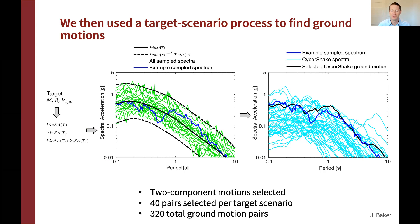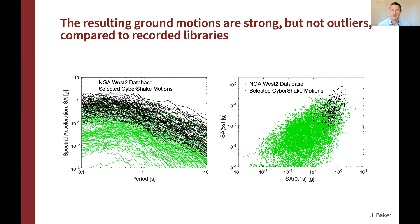In the end, we selected two-component ground motions from the CyberShake database — 42 two-component ground motions per scenario, for a total of 320 ground motion pairs across four scenarios each paired with two site conditions. The left figure shows 100 selected CyberShake response spectra in black alongside 100 NGA West 2 ground motions in green. The right figure plots one-second and 0.1-second spectral acceleration against five-second spectral acceleration for both sets. In both plots, the CyberShake ground motions are at the strong end of what we see in NGA West 2 but are not outliers — they're supplementing the high-amplitude cases where recordings are limited.